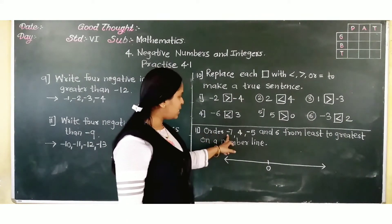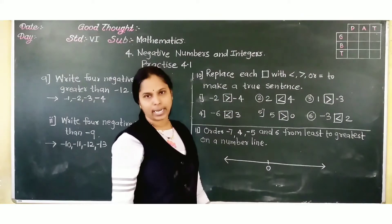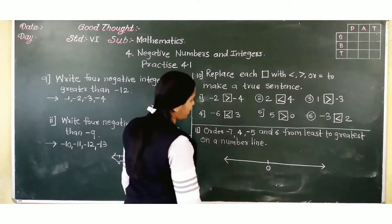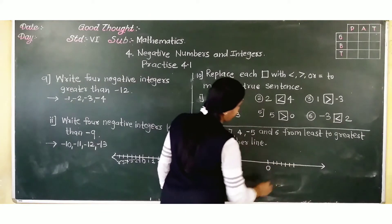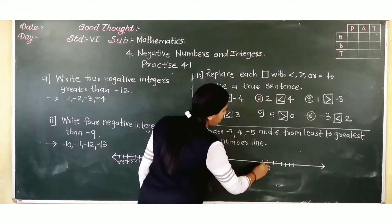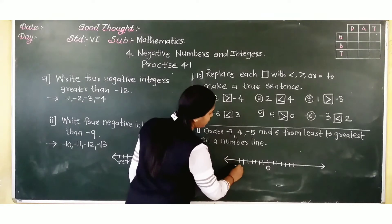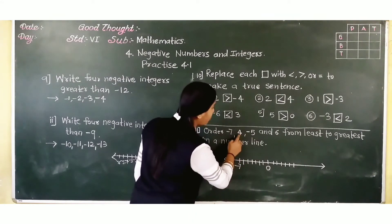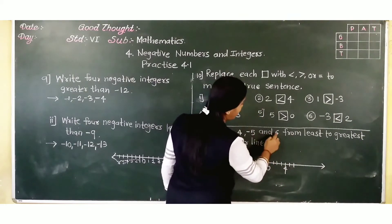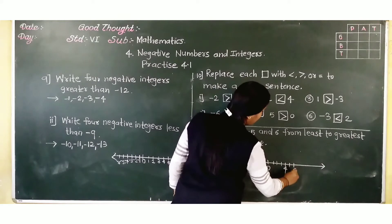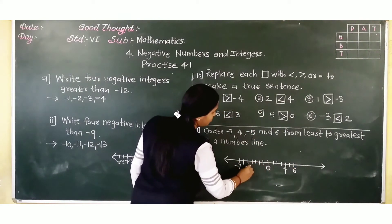Now order minus 7, 4, minus 5, and 6 from least to greatest on the number line. On the number line: positive side 1, 2, 3, 4, 5, 6 and negative side minus 1, 2, 3, 4, 5, 6, 7. So here minus 7 is marked, then plus 4 is at position 4, then 6 is at position 6, and minus 5 is at position minus 5. In this way we have to show the integers on the number line.